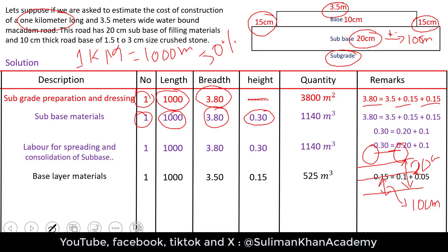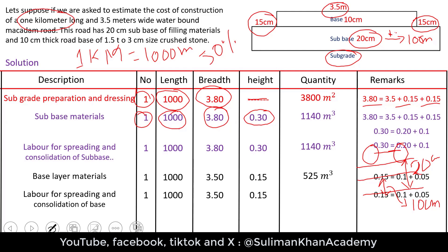Multiplying the four columns gives a base material quantity of 525 cubic meters. The material specification must be followed for the base layer. Labor is also required to spread the base materials, and that quantity is the same as the base layer material — 525 cubic meters — because the same material is simply being spread with no extra or shortage.